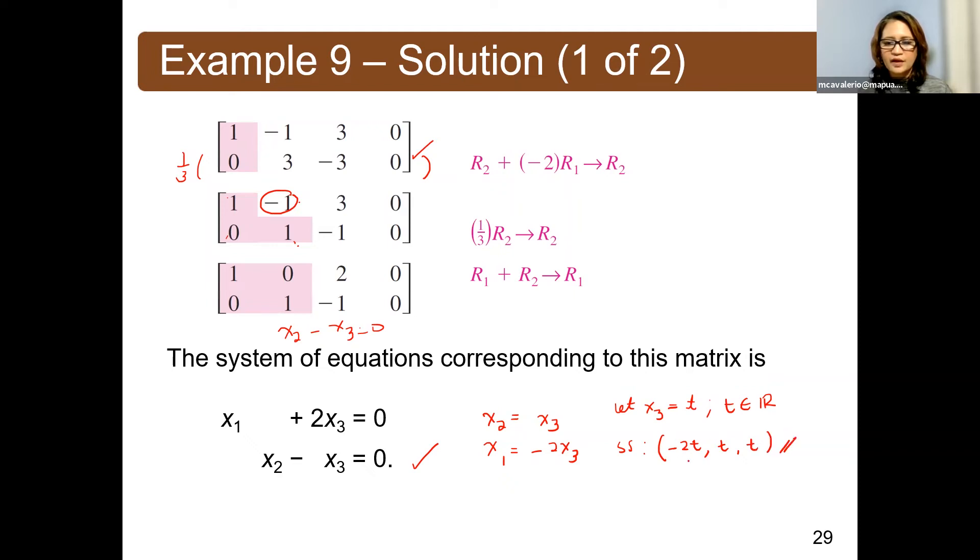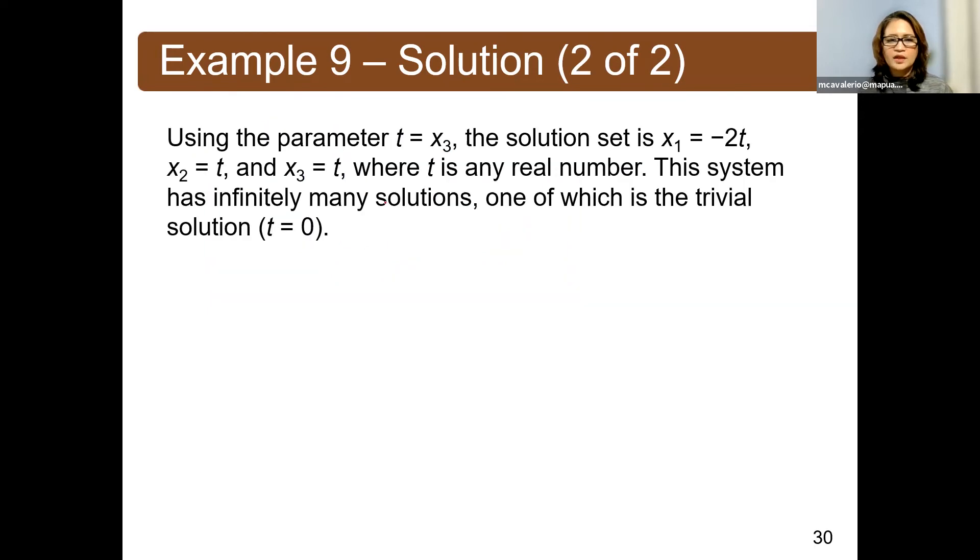You can assign any value for t since t can be any real number. So again, we have here the use of the parameter to represent x sub 3, so that the solution set is simply given by negative 2t, t, and t. Of course, if t is 0, then we will have the trivial solution. We come up with 0, 0, and 0.